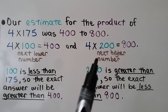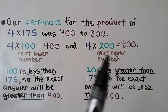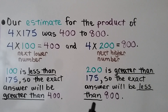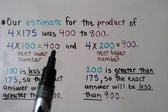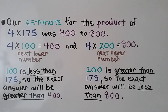And by going to the next higher number, 200 — 4 times 200 equals 800. Since 200 is greater than 175, the exact answer will be less than 800. So it's going to be between 400 and 800: greater than 400 and less than 800.